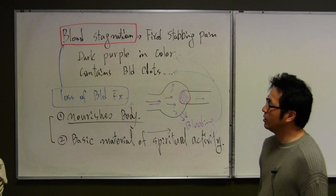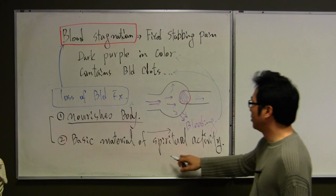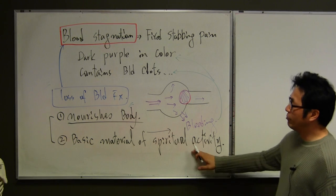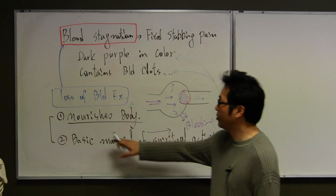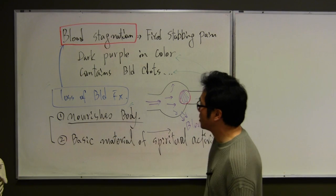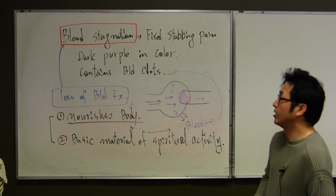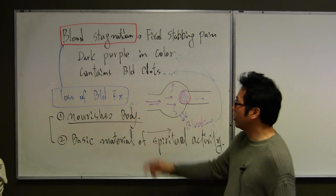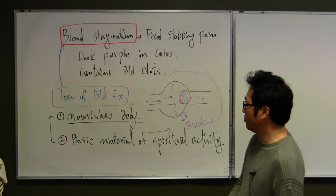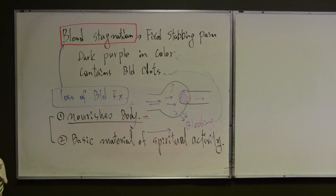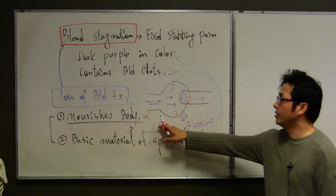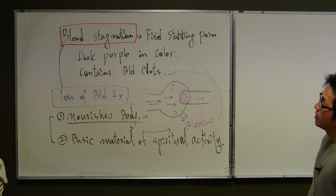The blood is a basic material of the spiritual activity. So it related with the mental activity or mental condition. And the previous one is nourishment. With the blood stagnation, usually cause of the dryness of the body or a certain area. With the stagnation of the blood associated area, can be dry up.